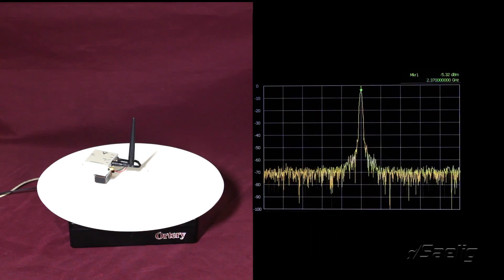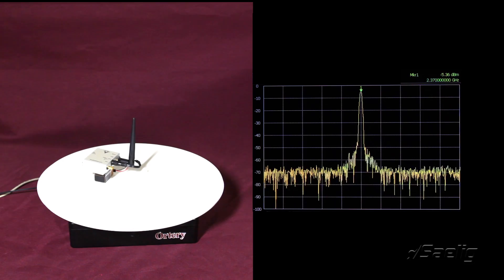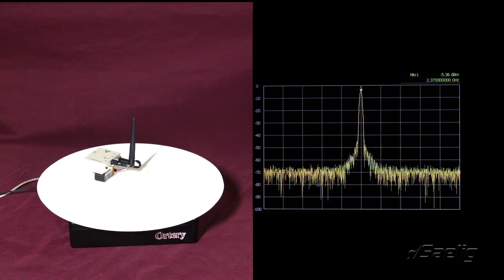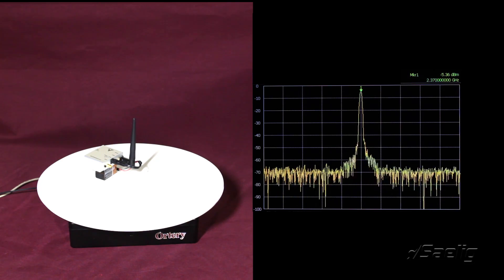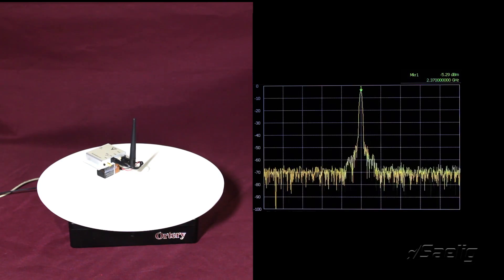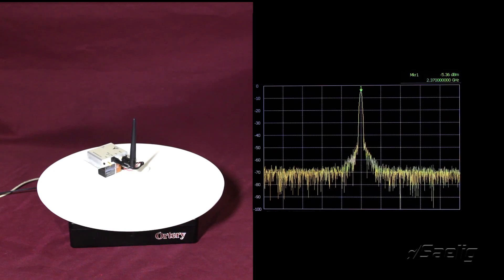Here you see the 2.37 gigahertz transmitter on the table. The table is going to rotate 9 degrees every step and we're just doing this to establish a reference level for the rest of the test using the Ramsey enclosure.